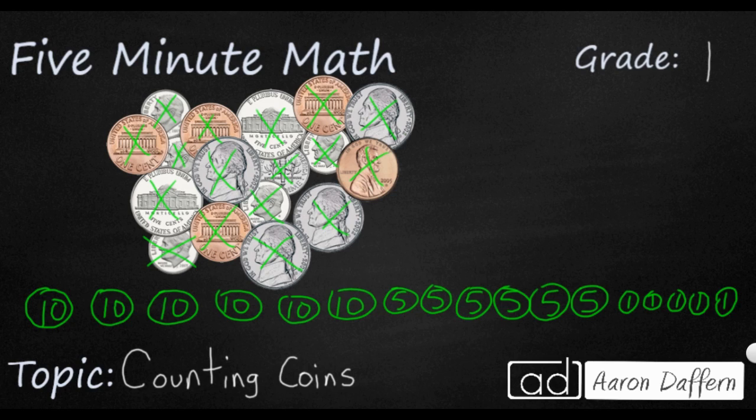So 10, 20, 30, 40, 50, 60. I'm going to write a 60 right there. 65, 70, 75, 80, 85, 90. And then we've got 92, 94, 95 cents.